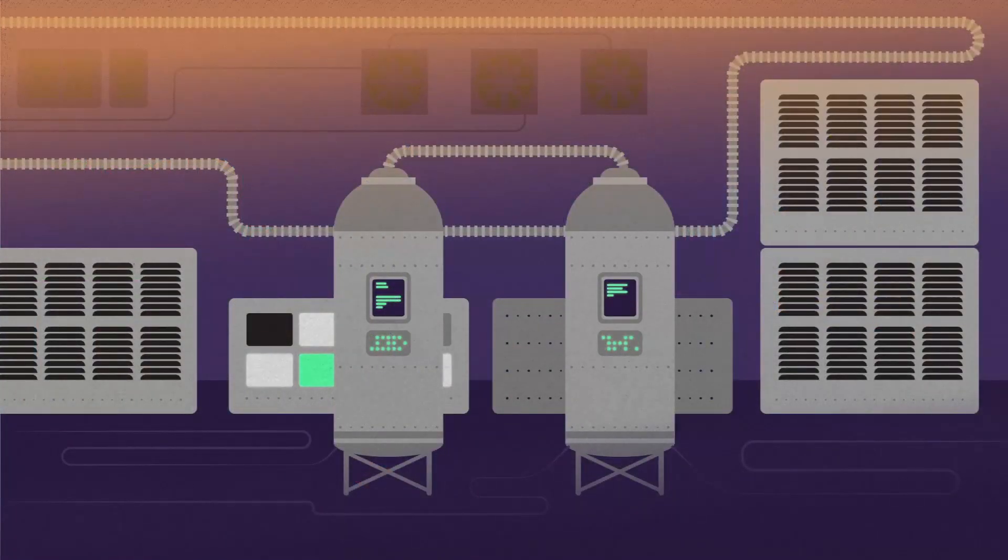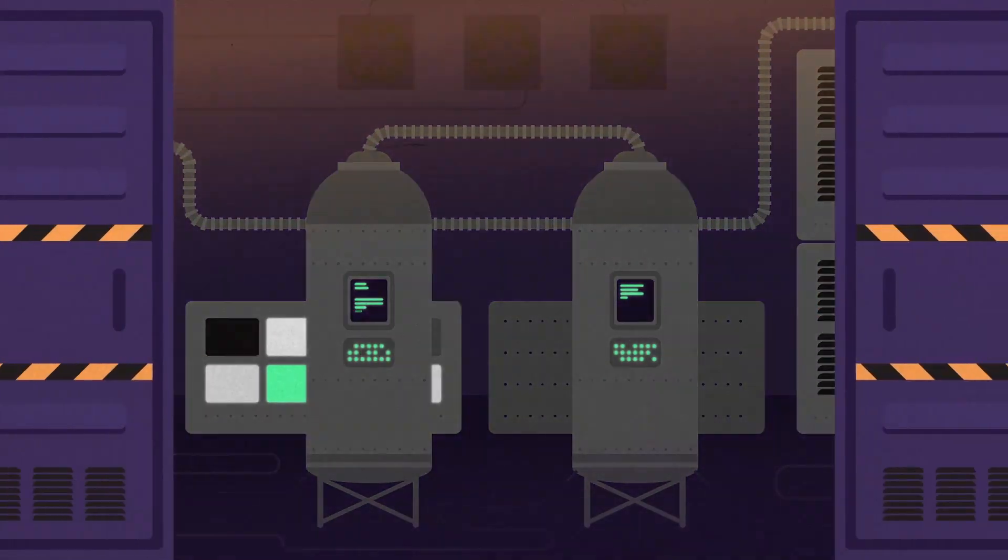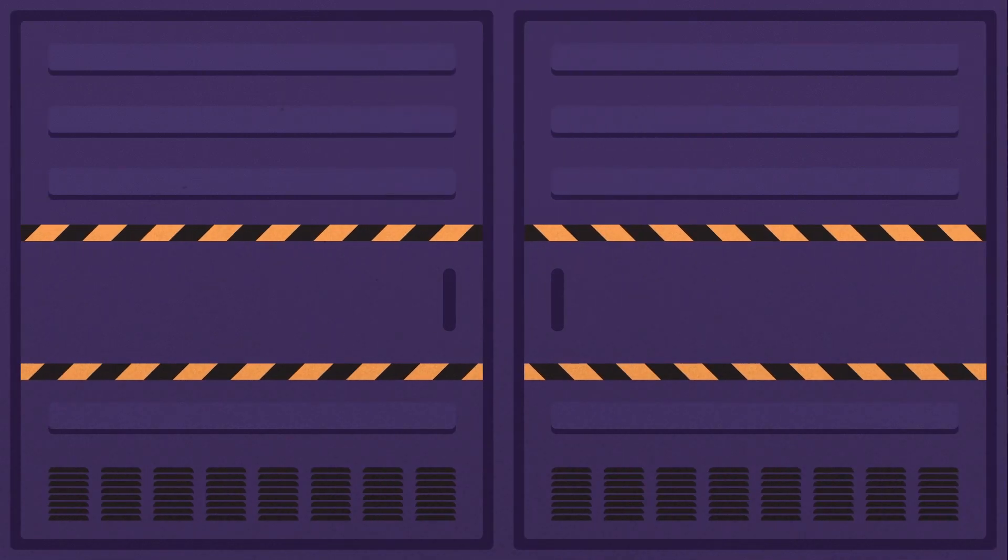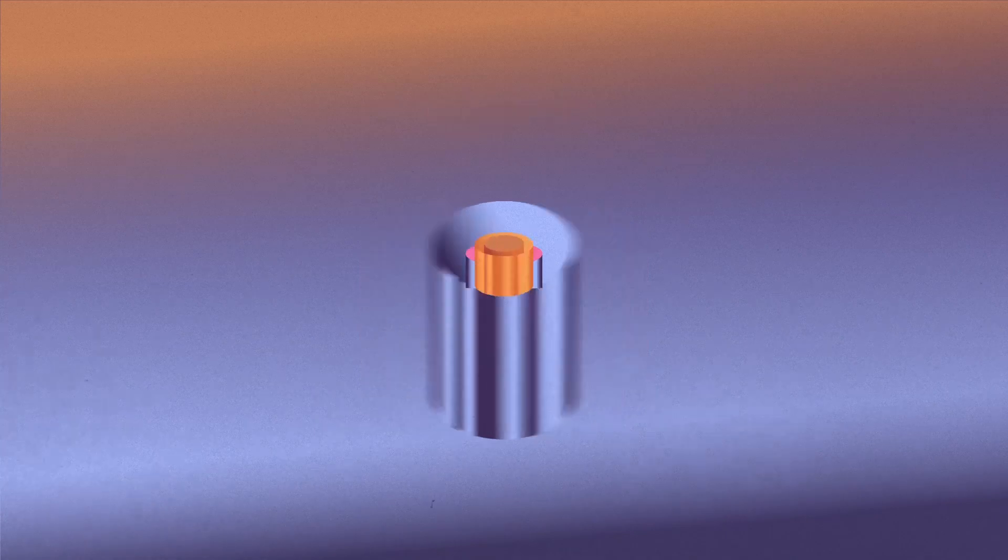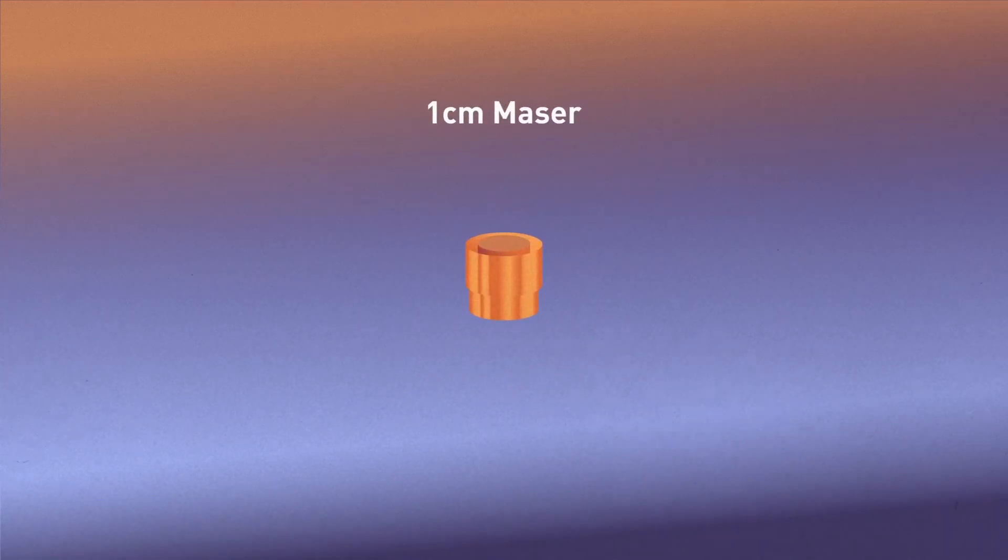But the real problem is that Masers are bulky, requiring large equipment and refrigerated rooms. But thanks to research from Imperial College and UCL, they developed a solid-state Maser able to operate at room temperature.